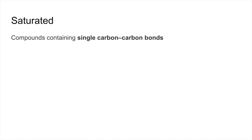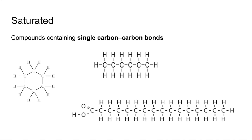Next one is saturated. These are compounds that contain single carbon-carbon bonds, so they're all classed as saturated compounds. You can see all the carbons are connected by single bonds. In this one here, we've got a double bond, but that's not a carbon-carbon bond — it's a carbon-oxygen bond. So we're only interested in the carbon-carbon bonds; these are all single, so this is classed as saturated.